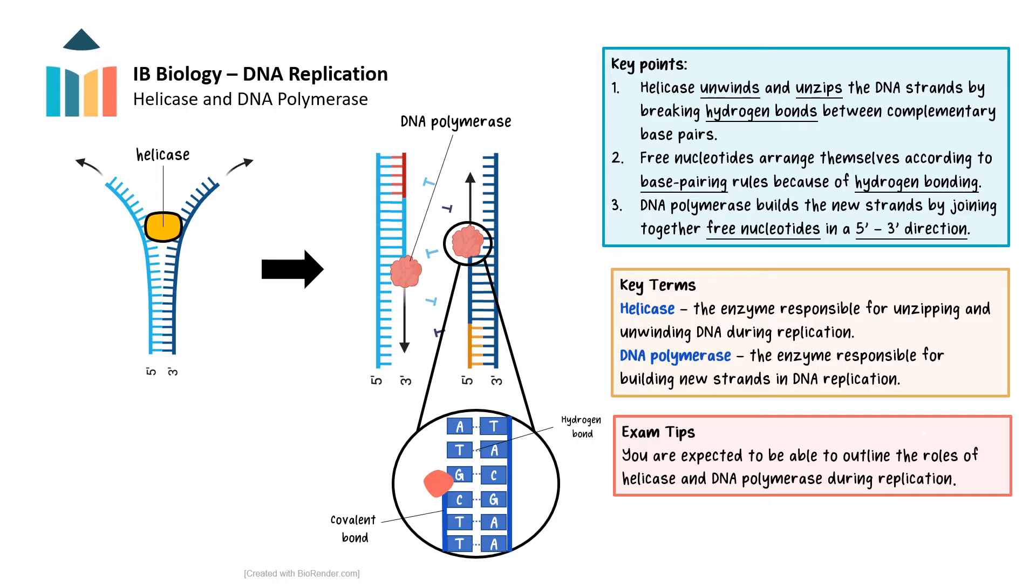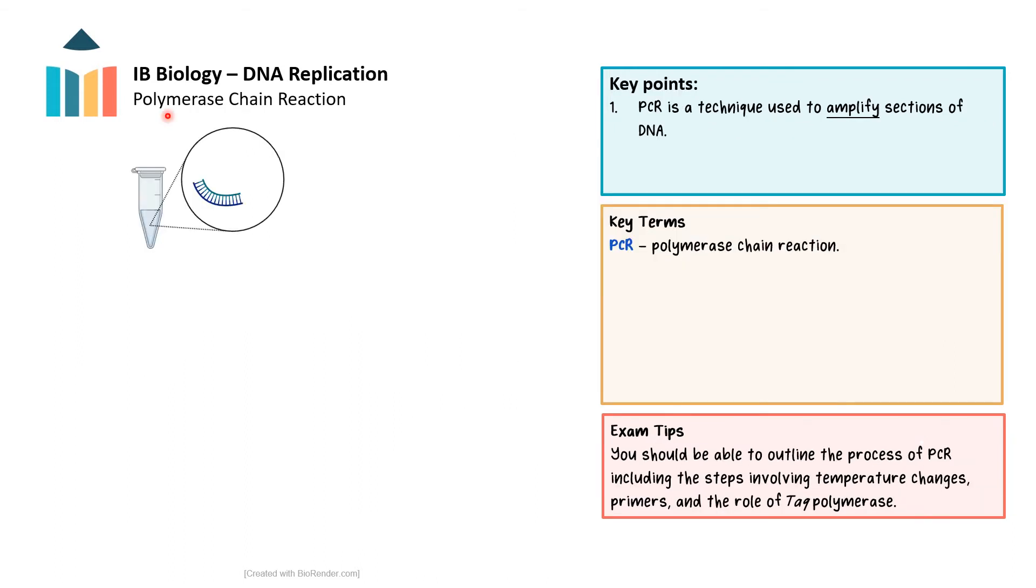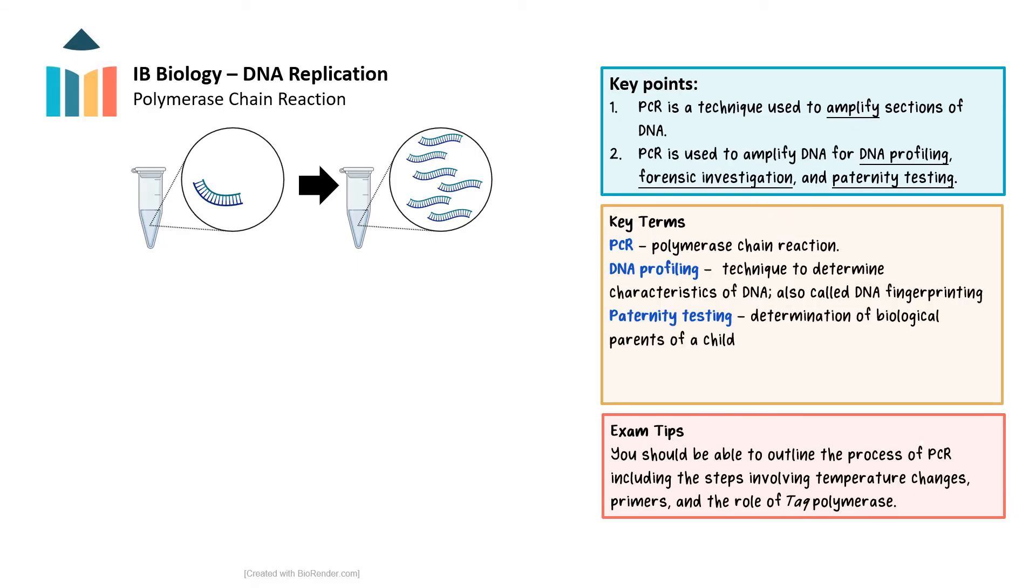Now let's see how we can use the principles of DNA replication in our own applications. Polymerase chain reaction, or PCR, is a technique used to amplify sections of DNA. In other words, it's a technique employed to make many copies of specific segments of DNA. This technique proves invaluable in scenarios where a minute DNA sample, such as one recovered from a crime scene, necessitates amplification for comprehensive analysis. Consequently, PCR finds widespread application in areas like DNA profiling, forensic analysis, and paternity determination.